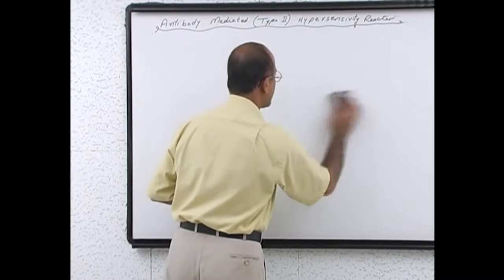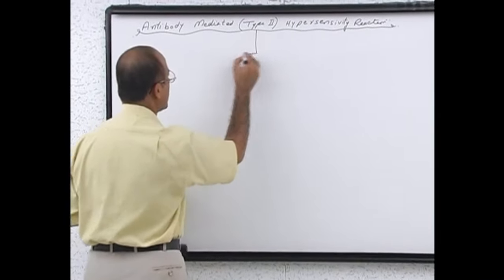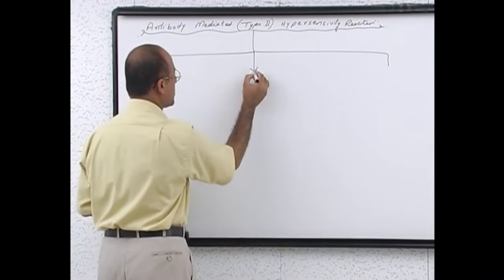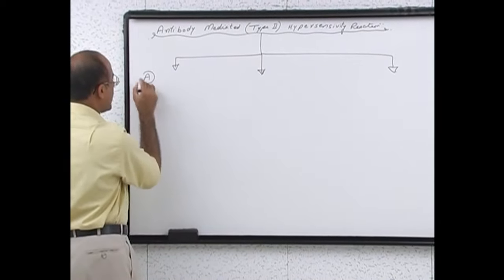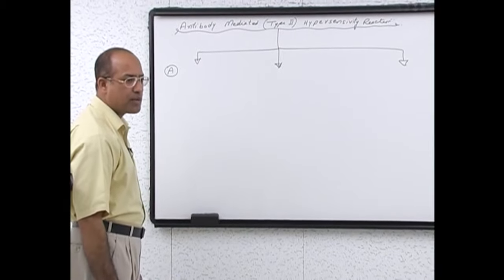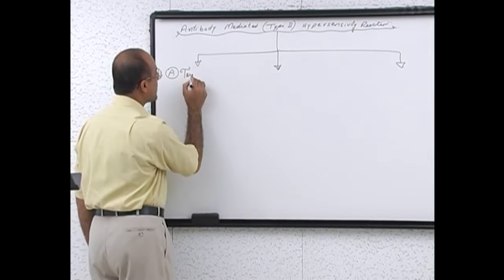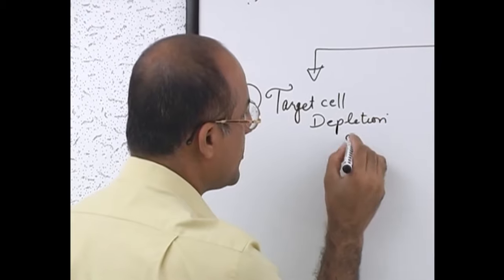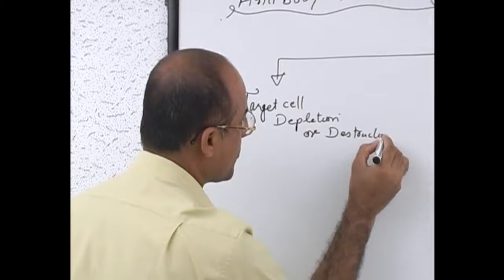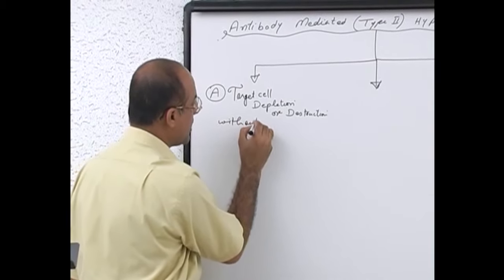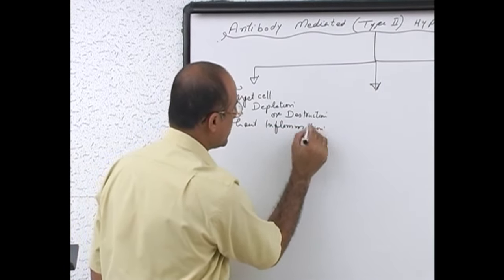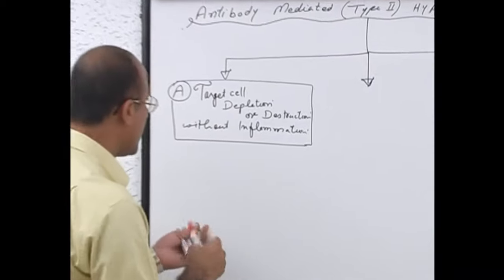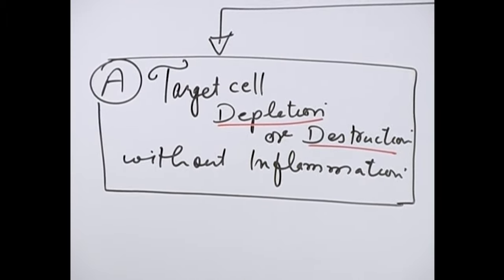Type 2 hypersensitivity reaction can be further subdivided into three types based on how damage occurs to the tissue. In category A, there is target cell depletion or destruction without inflammation. I will explain how this happens.